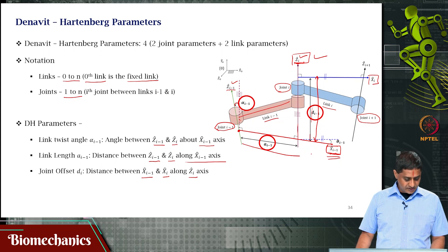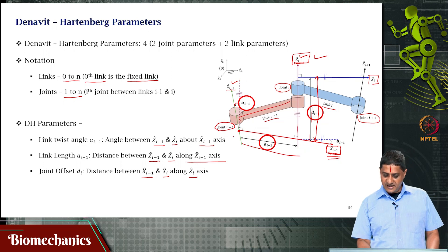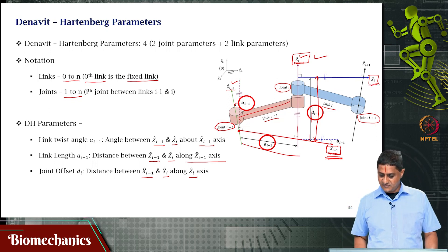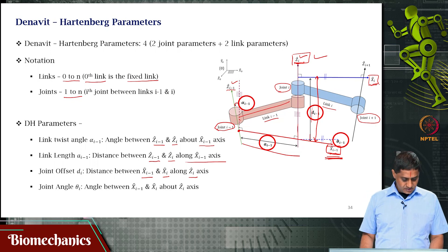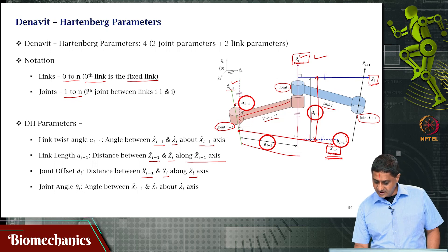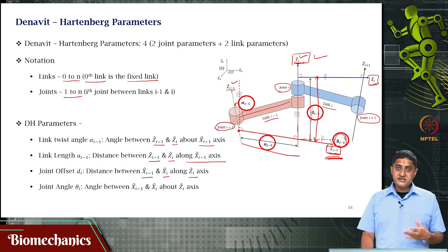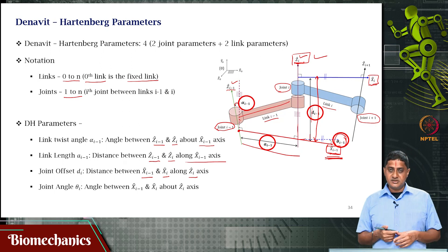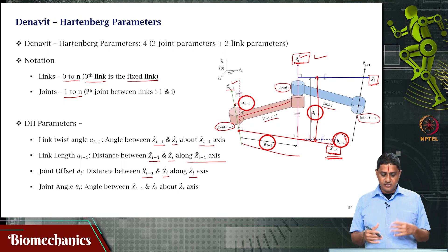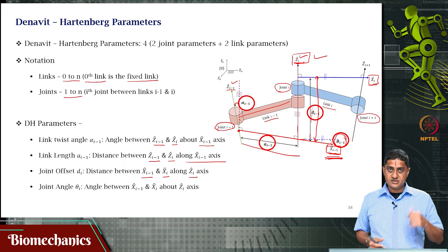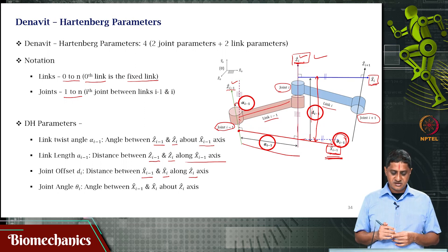Then joint angle theta(i): this is the angle between the X(i−1) axis and the X(i) axis about the Z(i) axis. Once you define the joint parameters and link parameters for all joints and links in the manipulator, you can construct a Denavit-Hartenberg table — the DH table — that contains n rows corresponding to n links and 4 columns: link twist angle, link length, joint offset, and joint angle.